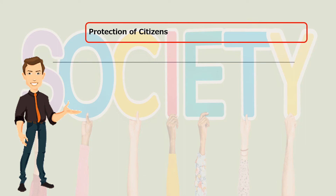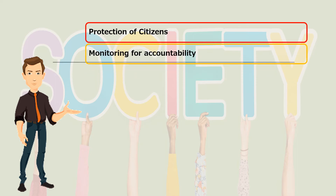Protection of citizens. This basic function of civil society consists of protecting lives, freedom, and property against attacks and despotism by the state or other authorities. Monitoring for accountability consists mainly in monitoring the activities of the central powers, state apparatus, and government. This is also a way of controlling central authorities and holding them to account.